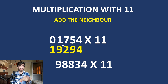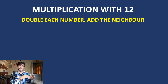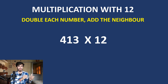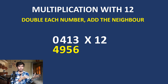We have learned the key for 11 — why stop there? The key for 12 is: double each number and add its neighbor. For 11 we were just adding the neighbor; now we double the number and add the neighbor. For 413 times 12: 3 has no neighbor so just 6 (double of 3). Double of 1 is 2 plus 3 equals 5. Double of 4 is 8 plus 1 equals 9. Double of 0 is 0 plus 4 equals 4. The answer is 4956.